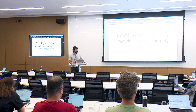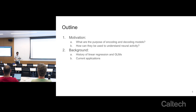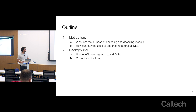Hello again. I'm Gabriel and this is Matz. Today we're basically going to be talking to you about encoding and decoding models of neural activity. This is more or less the outline for this introductory lecture. It's going to be focused on two main things: first, the motivation section — what are the purpose of encoding and decoding models in the context of neuroscience, and how can they be used to understand neural activity?